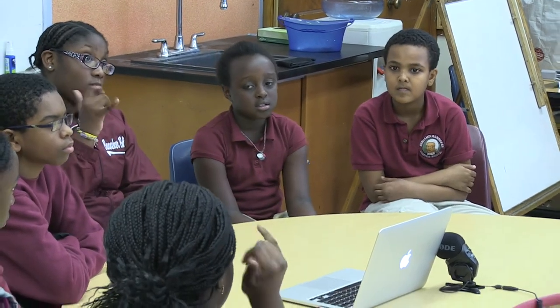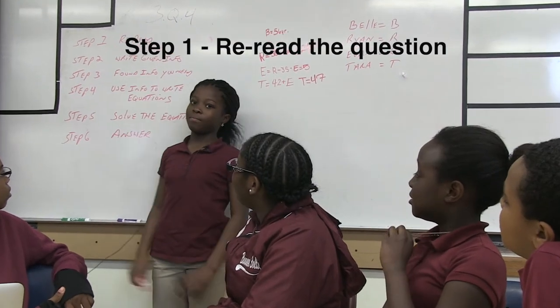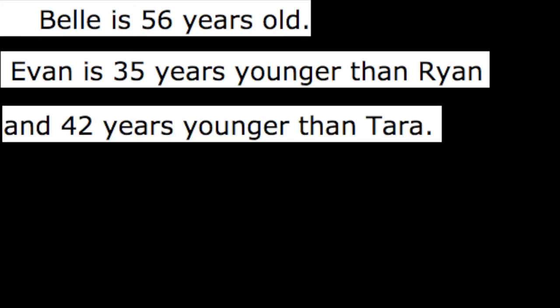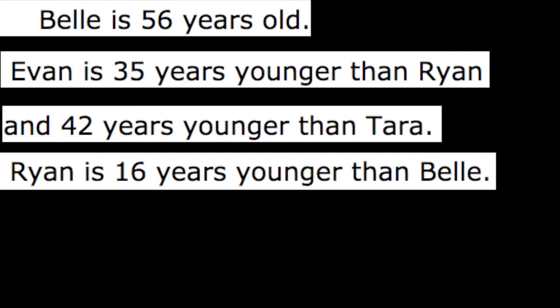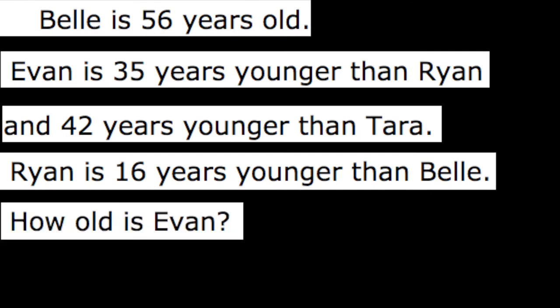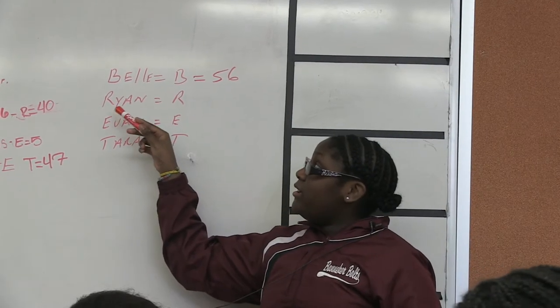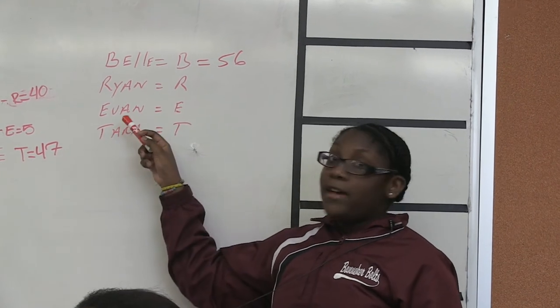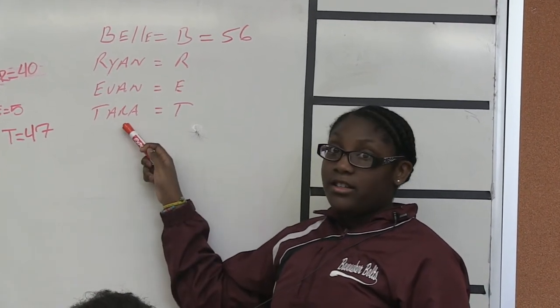And then once I find everybody else's age, I can find out how one person's age relates to the other person's age. The first thing you need to do is read the question. Belle is 56 years old. Evan is 35 years younger than Ryan and 42 years younger than Tara. Ryan is 16 years younger than Belle. How old is Evan? The next thing I would do is write down the name of the person whose age they already gave in the problem. This is the given information. Belle equals B and is 56. Ryan equals R. Evan equals E and Tara equals T.